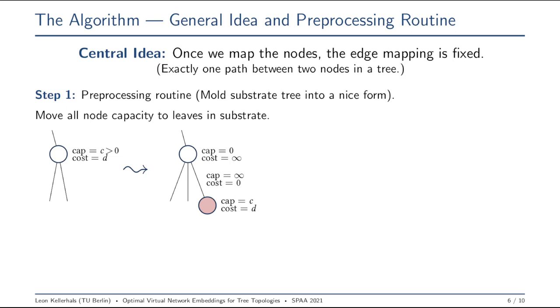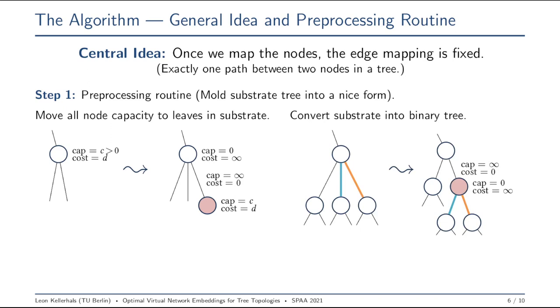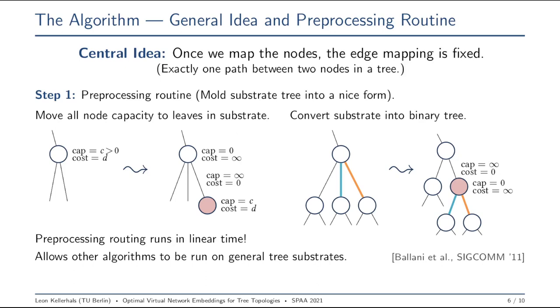The second pre-processing step is to ensure that our substrate is indeed not only a tree but a binary tree. How do I do that? Whenever I have some node with more than two children, I basically insert a layer in between. I add this red node and map some of the children from this node to the red node. And again, I have to adapt the capacity and the costs of the nodes and edges here accordingly.